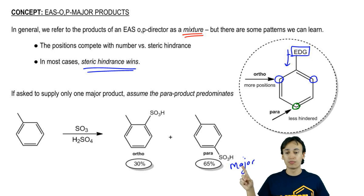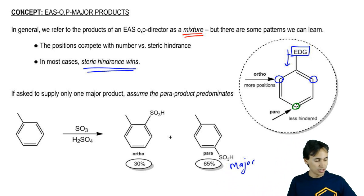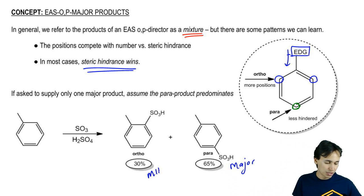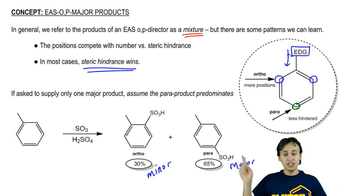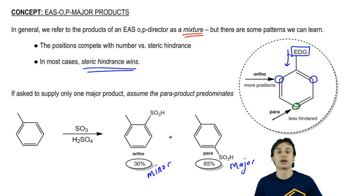What we are going to get is a major product of para. You would say that your para-sulfonic acid is going to be the major product and your ortho is going to be the minor. Even though there's more ortho positions, the steric hindrance, the benefit of sterics is going to make the para the major product.